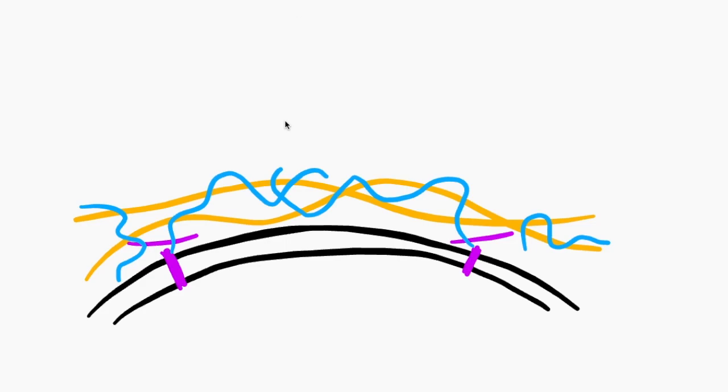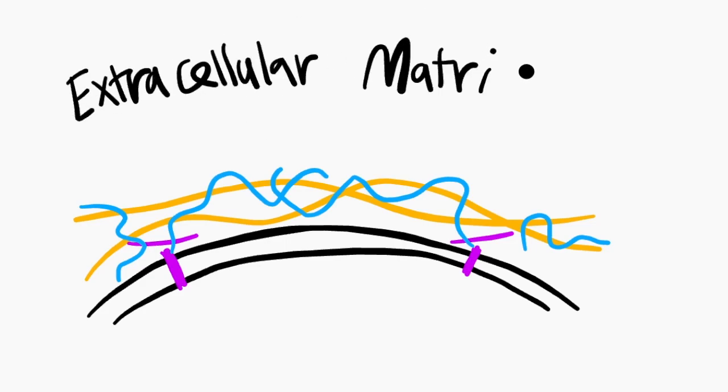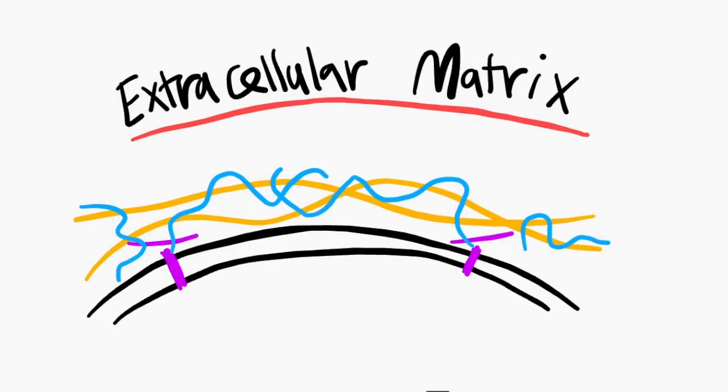The cellular matrix is a three-dimensional network of macromolecules consisting of collagen, proteoglycan, and glycoaminoglycans. They also have elastin, fibronectin, laminins, and a bunch of other glycoproteins. Overall, the extracellular matrix helps the cells bind together and regulate cellular functions such as adhesion, migration, proliferation, and differentiation.